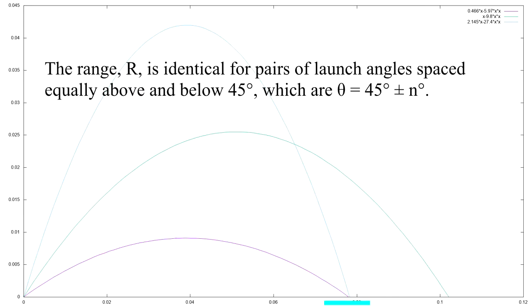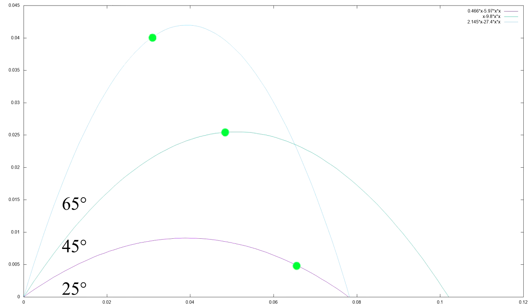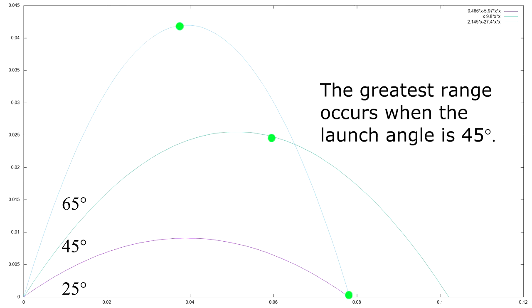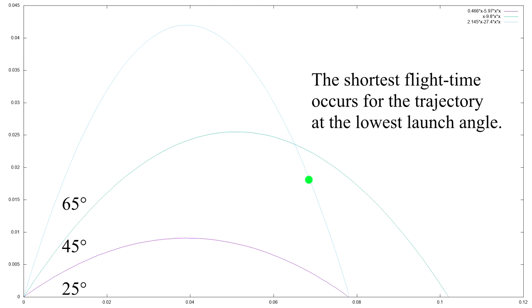The range R is identical for pairs of launch angles spaced equally above and below 45 degrees, which are θ = 45° ± n°. For example, when n = 20°, the two launch angles are 25° and 65°. The greatest range occurs when the launch angle is 45 degrees. The shortest flight time occurs for the trajectory at the lowest launch angle.